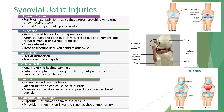Patients often complain of generalized or localized joint pain on one side. A bursa is a fluid-filled sac that develops in areas of friction. Sudden irritation can cause acute bursitis, while overuse and constant external compression can cause chronic bursitis. Signs and symptoms include swelling, pain, and some loss of function. Repeated trauma can lead to calcification and degeneration of the internal bursa lining.